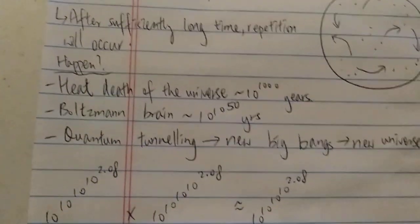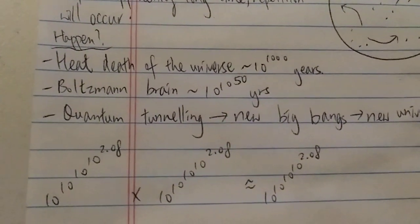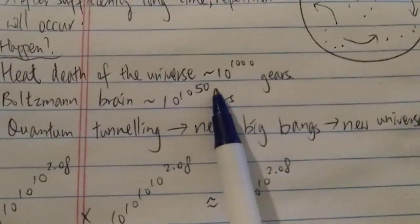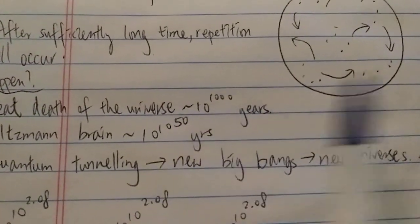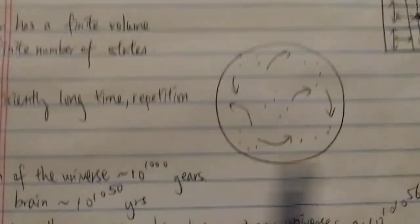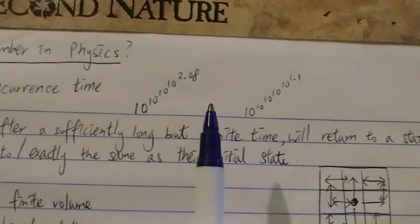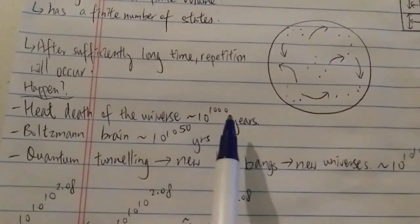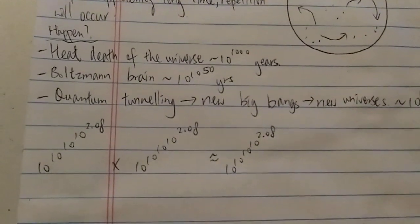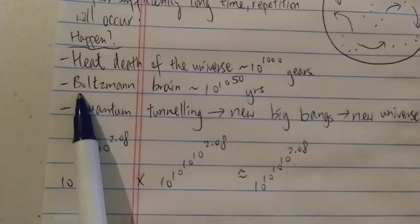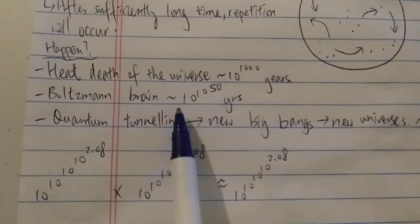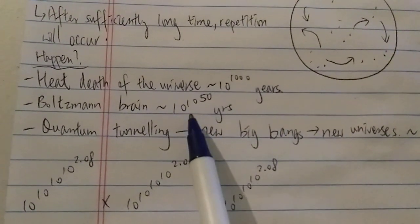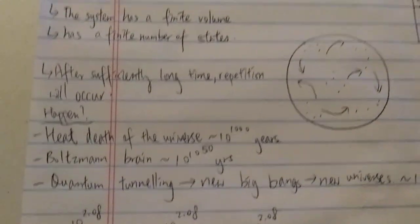Would this actually happen? Based on our current understanding, the most likely scenario is the heat death of the universe, which will occur in around 10 to the 1000 years. That's a very big number, but it is completely minuscule compared to the Poincaré recurrence time. Similarly, the Boltzmann brain — if you know what that is — would appear randomly in around 10 to the 10 to the 50 years, which is again nothing compared to the Poincaré recurrence time.